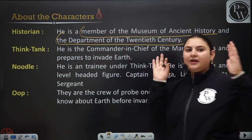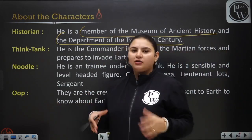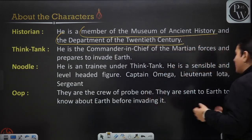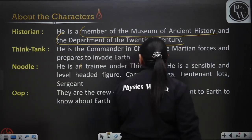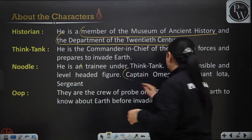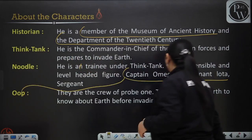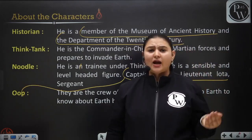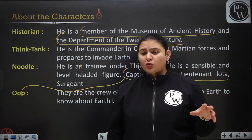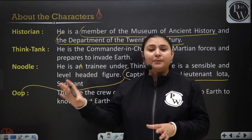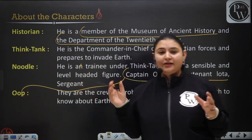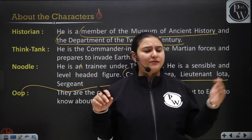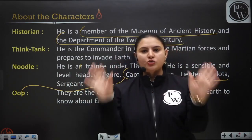Then we meet Noodle. Noodle is a trainee under Think Tank. He is a sensible and level-headed figure. He has some brains — he doesn't talk to mirrors and he's not like Think Tank, who is always boasting about himself. Noodle is a self-composed person, quite nice. He is the main character who puts some sense into Think Tank.